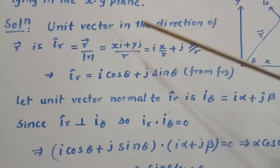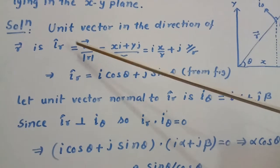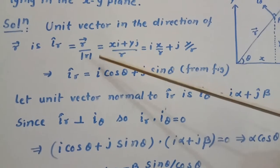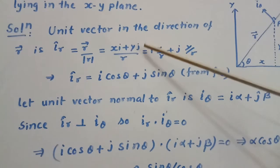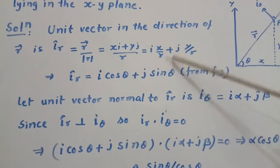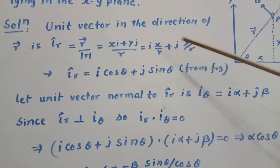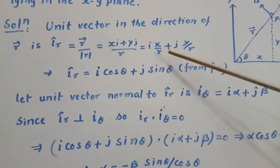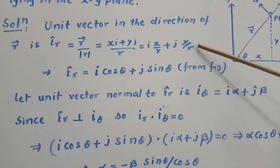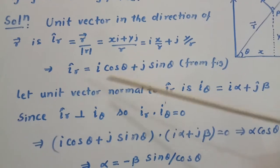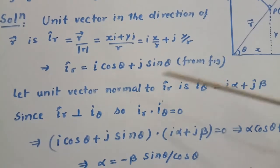Now, unit vector in the direction of R is i_r. So vector R divided by modulus R, that gives xi plus yj divided by R, which is equal to i x upon R plus j y upon R. But x upon R equals cos theta and y upon R equals sin theta. So we get i_r equal to i cos theta plus j sin theta.